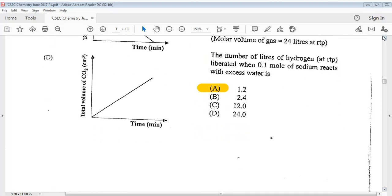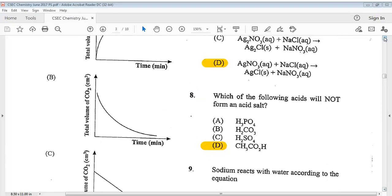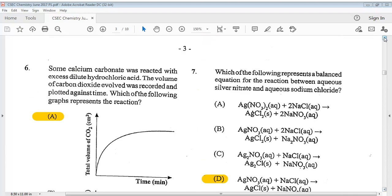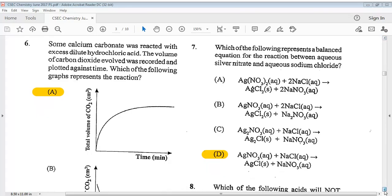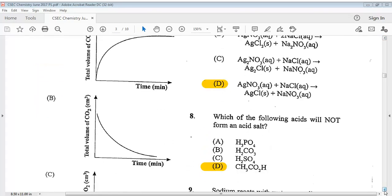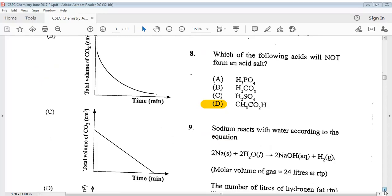Let's move on to question number 7. So you can take a look at question number 7. And the answer for question 7 is D. Question number 8 says, which of the following acids will not form an acid salt? The answer is D, CH3CO2H.